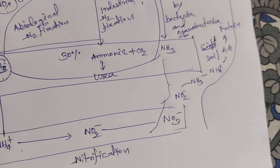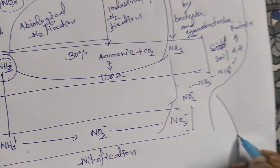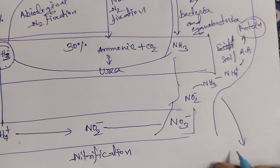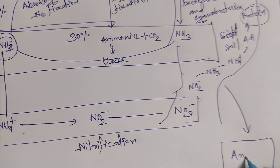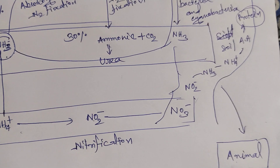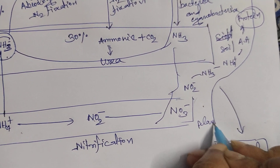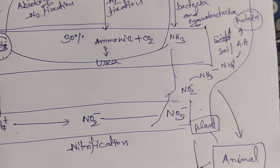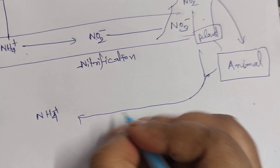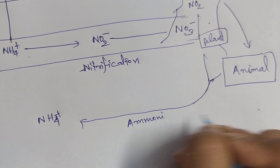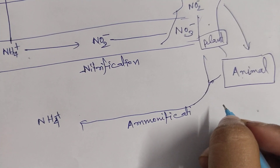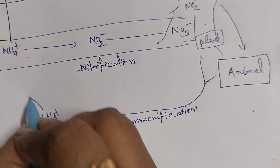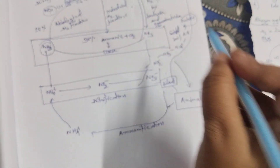This ammonia is converted into protein in the plant. When this protein enters an animal, it is converted into animal protein. After the death of plants and animals, the remains are converted into ammonia — this process is called ammonification. This ammonia is then converted into ammonium radical, and this cyclic pathway is called the nitrogen cycle.